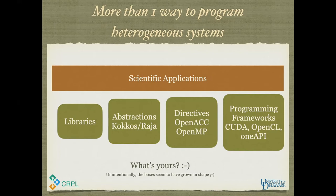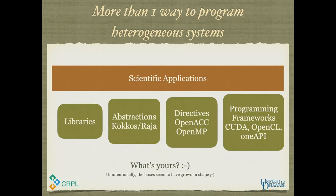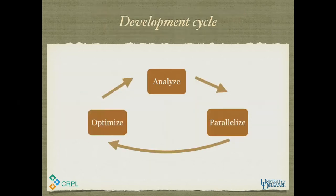We chose directives. This talk is going to cover two different projects using OpenACC — one was a relatively easier project, one was not. I'm trying to give you a feel for what are the different directions directives could take, and how directives are not magical. We have to do our fair share before expecting directives to do their magic. This development cycle holds good for any programming model you choose.